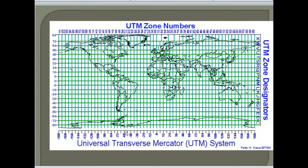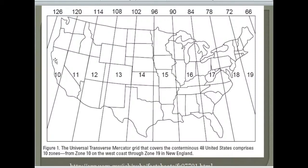Looking at these divisions, you can see that Oregon is in Zone 10 of the UTM system. Zooming in on Zone 10, we're between 126 degrees west longitude and 120 degrees west longitude. The eastern part of the state is in Zone 11.